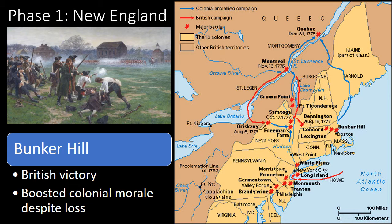The first phase of the war happens in New England. The major battle of this phase will be Bunker Hill — it is a British victory, but it boosts colonial morale because the Americans were able to stand toe-to-toe with the British. On June 17, 1775, the British defeated the Americans at the Battle of Bunker Hill in Massachusetts. Despite their loss, the inexperienced colonial forces inflicted significant casualties against the enemy, and the battle provided them with an important confidence boost during the Siege of Boston. Although commonly referred to as the Battle of Bunker Hill, most of the fighting actually occurred on nearby Breed's Hill.